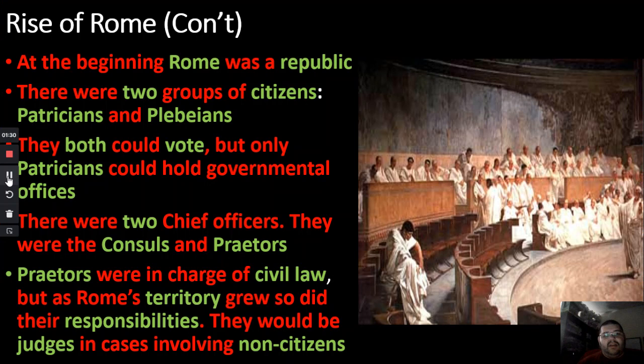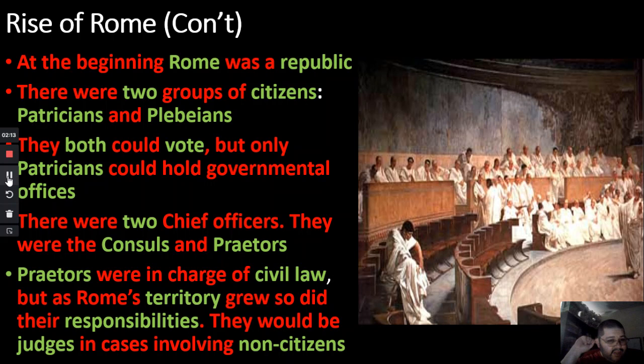As I said in the last lecture video, Rome started off as a Republic. There were two types of citizens: the patricians and the plebians. Both were allowed to vote, but only the patricians could actually hold government office. So all citizens could vote, but unless you were a patrician, you could not run for political office.